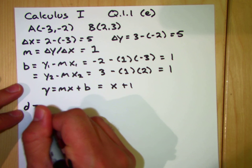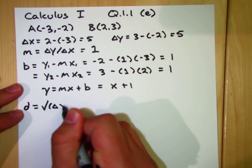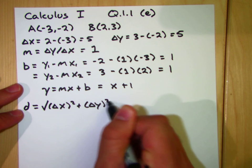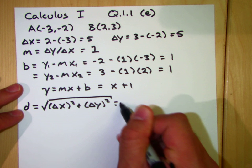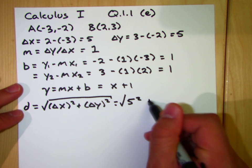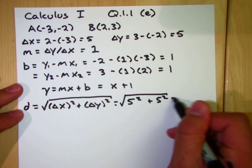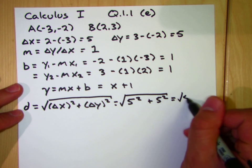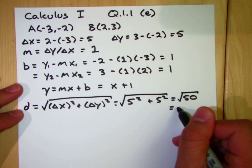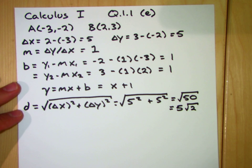And then the distance between these two points is just the square root of delta X squared plus the square root of delta Y squared, which is equal to 5 squared, which is equal to the square root of 50, which is also equal to 5 times the square root of 2.